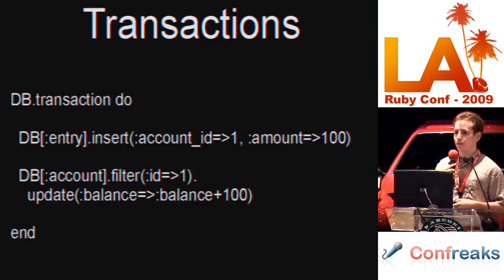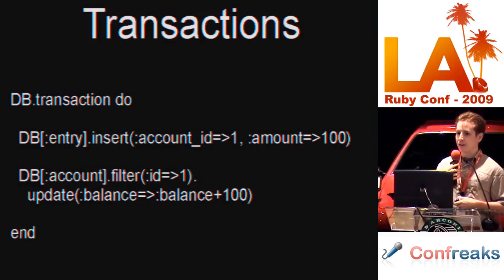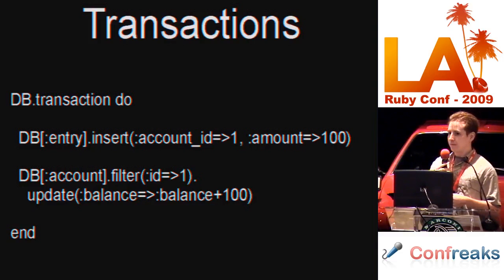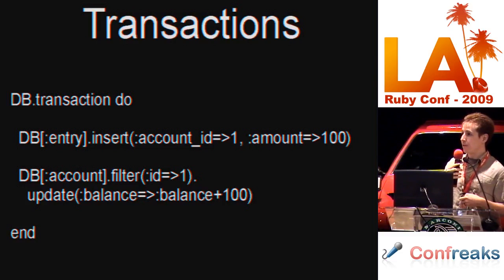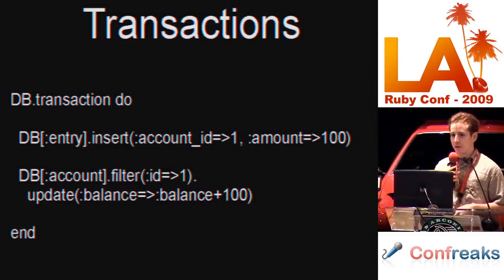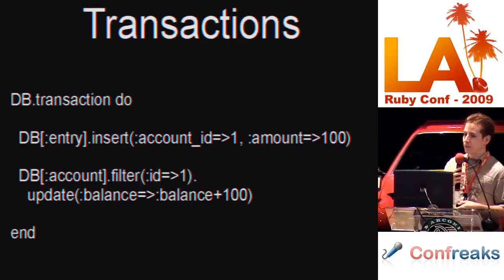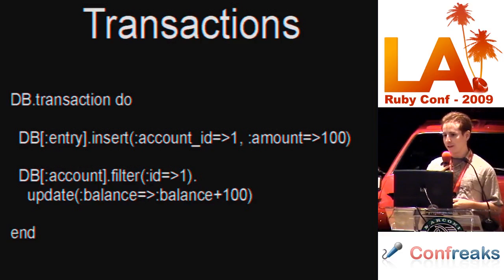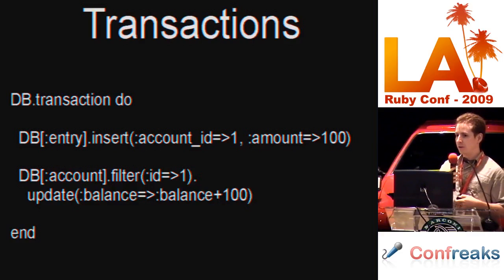The only way to use transactions with Sequel is through the database object's transaction method. It takes a block and ensures that all database interaction inside the block uses the same database connection inside a database transaction. This is necessary if you are making changes to the database and want to ensure that either all changes are made or no changes are made. In the example on the screen, you want to add an accounting entry to the database and update the account balance at the same time.